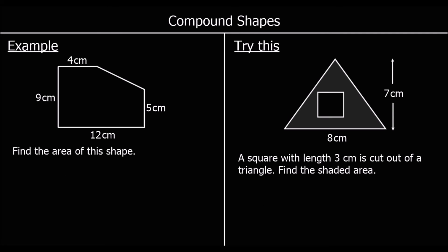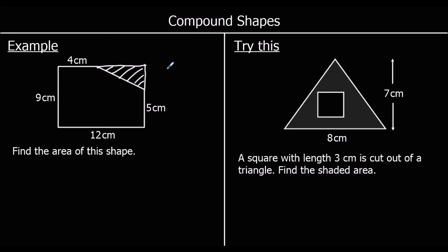Another compound shape — this time it's either a rectangle with a triangle cut out of it, or two rectangles and a triangle. It would be easier to treat it as one rectangle with a triangle cut out, so we work out the total rectangle area and then subtract the triangle.